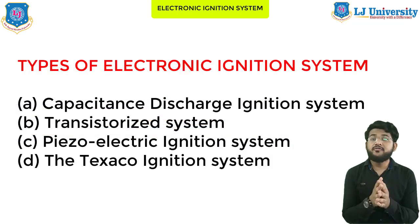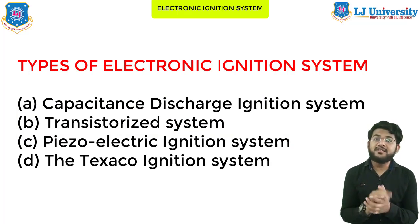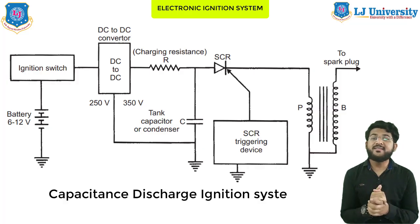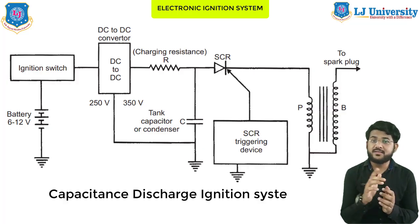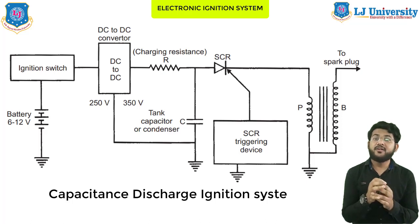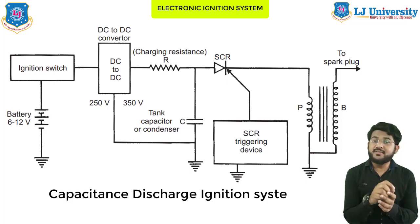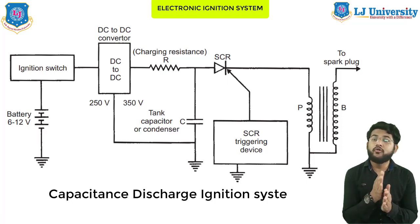In other literatures, some electronic ignition systems are described by different names, but the working principle remains the same. The first additional system is the capacitor discharge ignition system — CDI. It mainly consists of a 6-volt battery, ignition switch, DC-to-DC converter, charging resistance, tank capacitor, silicon controlled rectifier (SCR), an SCR triggering device, a step-up transformer, and spark plug. The 6-volt battery is connected through the ignition switch to a DC-to-DC converter designed to increase voltage to 250 or 350 volts.